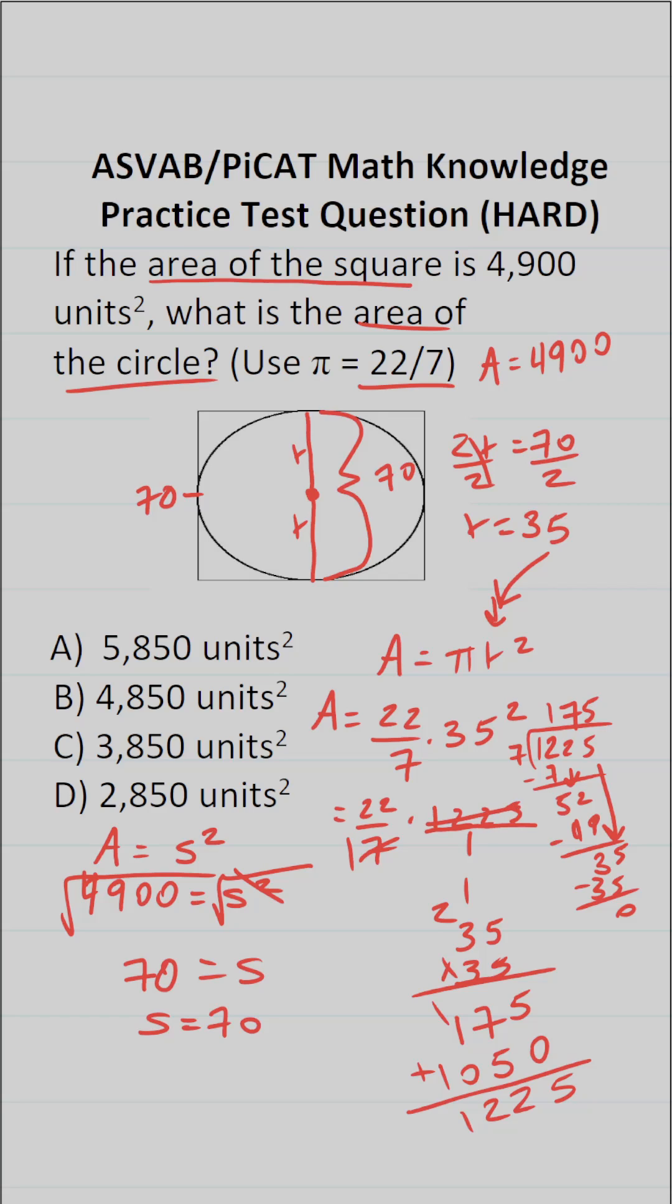7 goes into 12, 25, 175 times. This simply becomes 22 over 1, which is 22, times 175 over 1, which is 175. So this is the only thing we have left to work out.